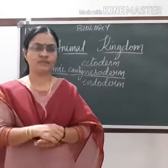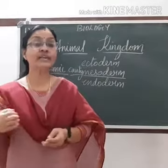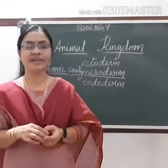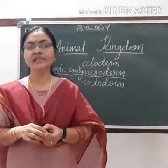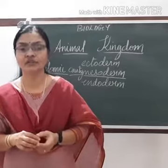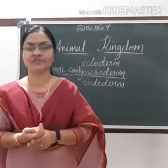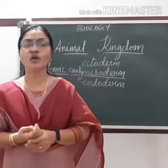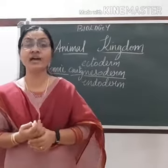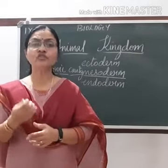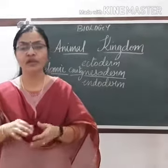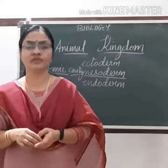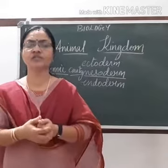Next is Echinodermata — these are spiny-skinned organisms with radial symmetry. An example is starfish. They have tube feet for moving around and for taking in food and water, including oxygen dissolved in water.